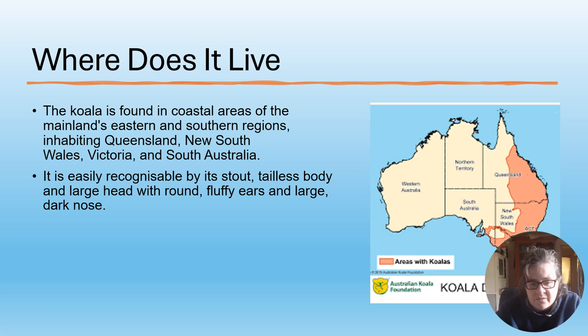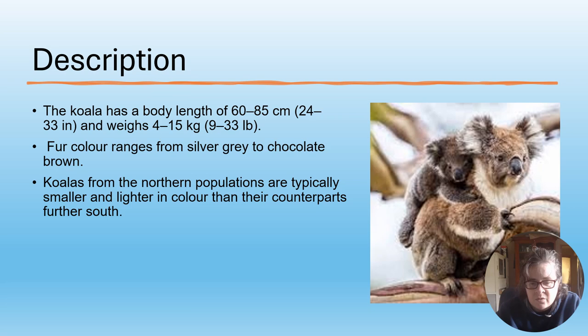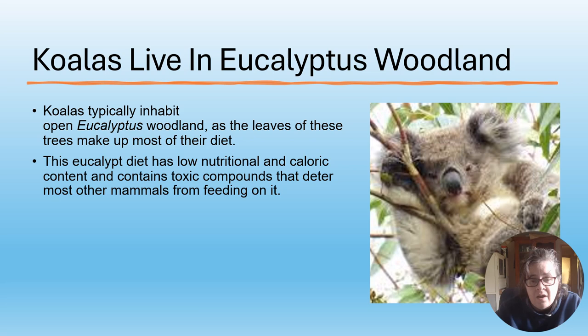Koalas are found in coastal areas of Queensland, New South Wales, Victoria and South Australia. Easily recognisable by its stout tailless body and large head with round fluffy ears and large dark nose. Body length of 60 to 85 centimetres, weight from 4 to 15 kilograms. Fur ranges from silver grey to chocolate brown, and koalas from northern populations are typically smaller and lighter in colour than their counterparts further south. Koalas live in open eucalyptus woodland, as the leaves of these trees make up most of their diet.